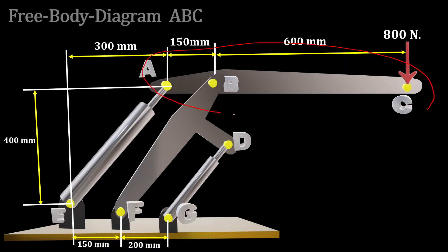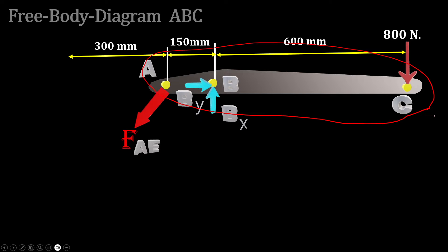First, for the free body diagram of ABC, we can separate our robotic arm from other parts of the structure and jot down the forces. There is 800 Newtons applied at C, the concentrated load at C, then at B we have By and Bx at the supports.